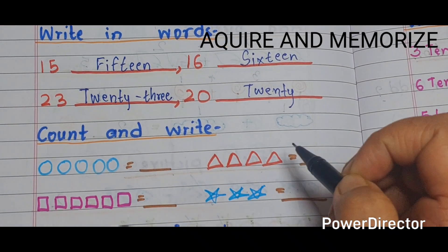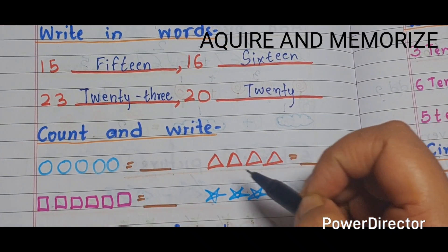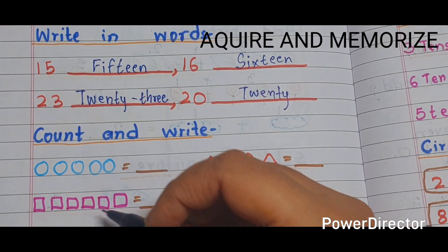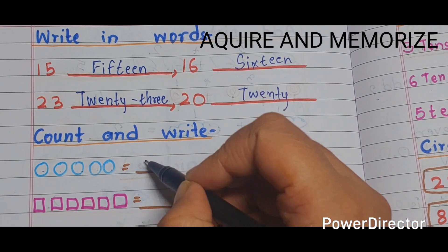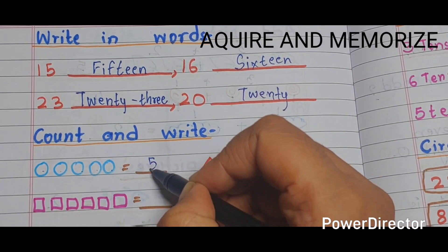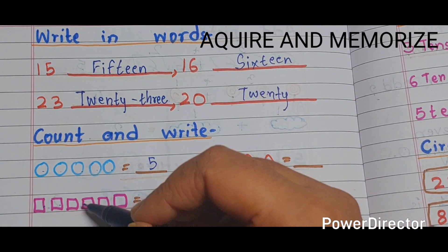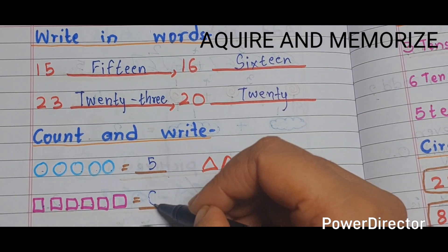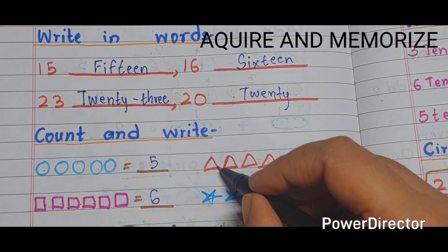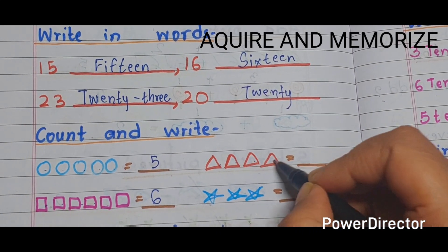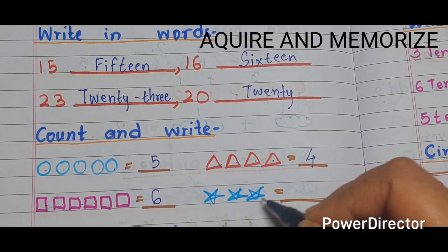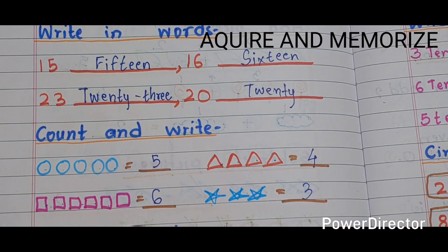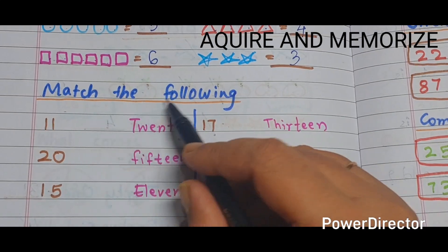Next section is 'count and write'. We have to count the objects and write the number. 1, 2, 3, 4, 5 — we write 5. 1, 2, 3, 4, 5, 6 — we write 6. 1, 2, 3, 4 — we write 4. 1, 2, 3 — we write 3.